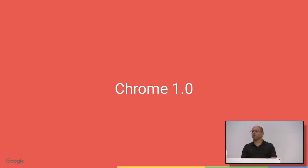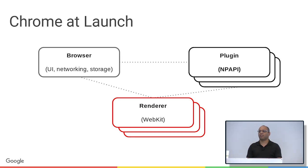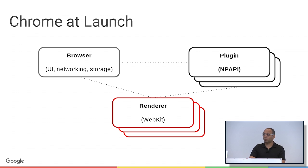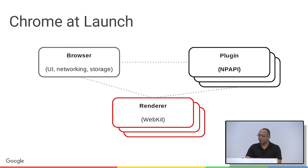But how did Chrome look when we launched? In Chrome 1.0, there were multiple processes, each denoted by a box. Some of them are sandboxed — that's the red line — and they talk to each other through dotted lines, which is IPC. This is a huge improvement from the status quo. We moved the code that we control, which operates on untrusted data from the internet, into processes that limit the damage they can do to your system. There are multiple of these processes, so if one tab went down, it wouldn't take down the others.